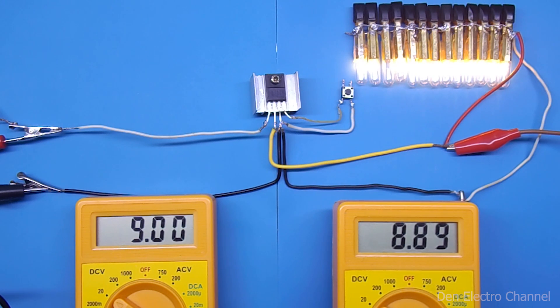It turns out that the minimum difference between the input and output voltage is only 0.2 volts. Thanks to such a small voltage drop, the efficiency of the circuit can be significantly increased. To get 9 stabilized volts at the output, it is enough to apply a little less than 10.